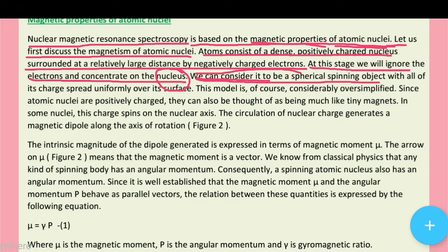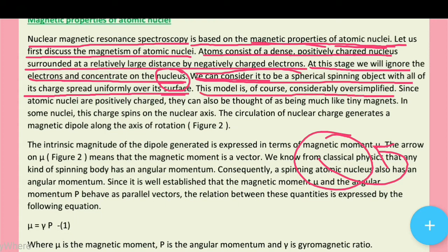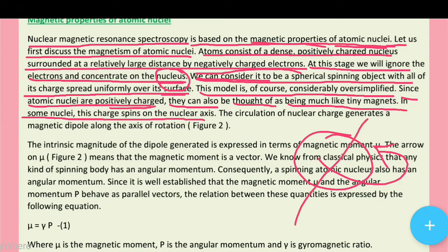We can consider the nucleus to be a spherical spinning object with all of its charge spread uniformly over its surface. Hum nucleus ko ek spherical spinning object consider karenge jo spin karta hai, aur uska positive charge uske surface pe uniformly spread hua hoga. This model is of course considerably oversimplified. Some nuclei spin on the nuclear axis — kuch nuclei mein charge nuclear axis pe spin kareга.